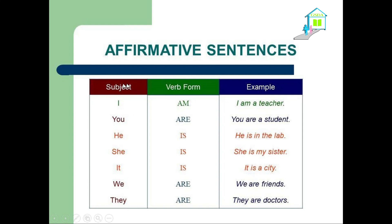The subject here — subject pronouns. Here we have our subject pronouns and the forms of the verb to be according to those subject pronouns. We use I with am, you with are, he is, she is, it is, we are, they are. Here we have some examples, and here we have the verb to be in the simple present.